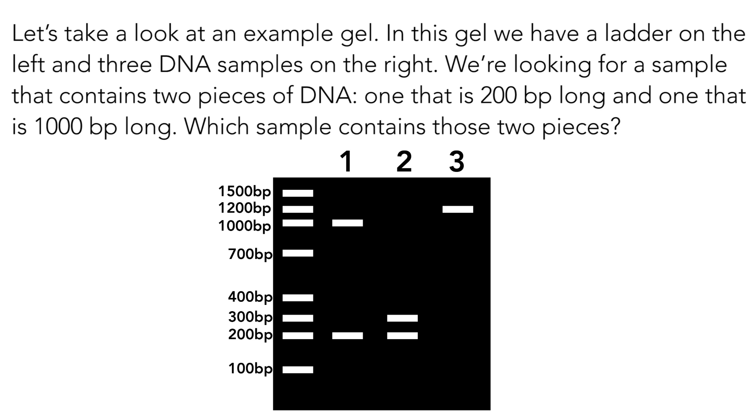Now, let's go over the answers. Question one. The correct answer is sample one. Sample one contains a long piece of DNA at 1,000 base pairs, and a short piece of DNA around 200 base pairs. Lane two is incorrect because although it has two bands, they are 200 base pairs and 300 base pairs long. Lane three is incorrect because it has only one band that is around 1,200 base pairs in length.